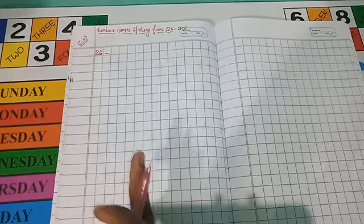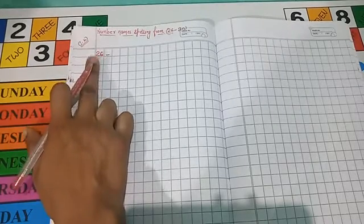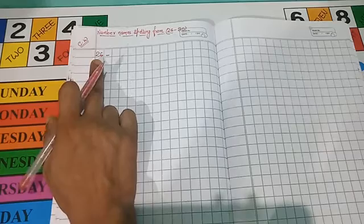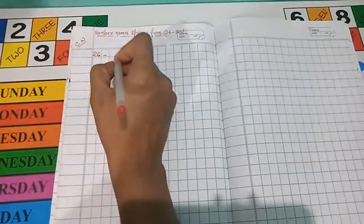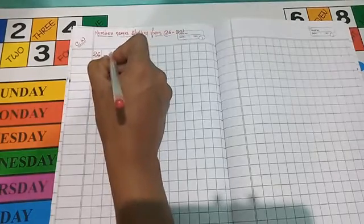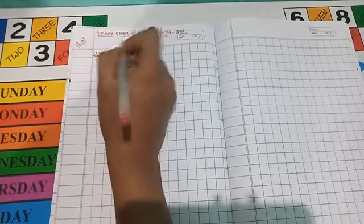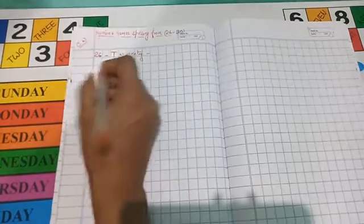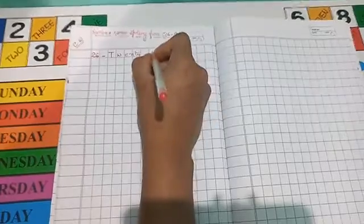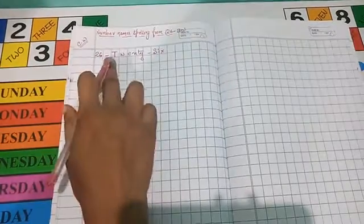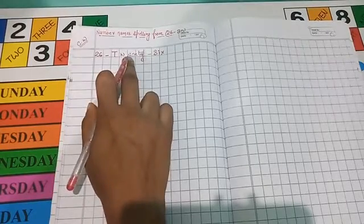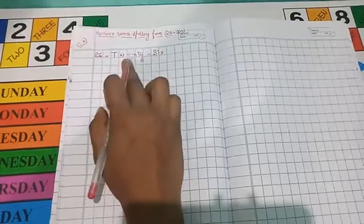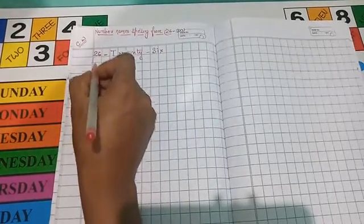Your first number is 26. The spelling of 26 is T-W-E-N-T-Y, 26, S-I-X, 26. T-W-E-N-T-Y, 26, S-I-X, 6, 26.